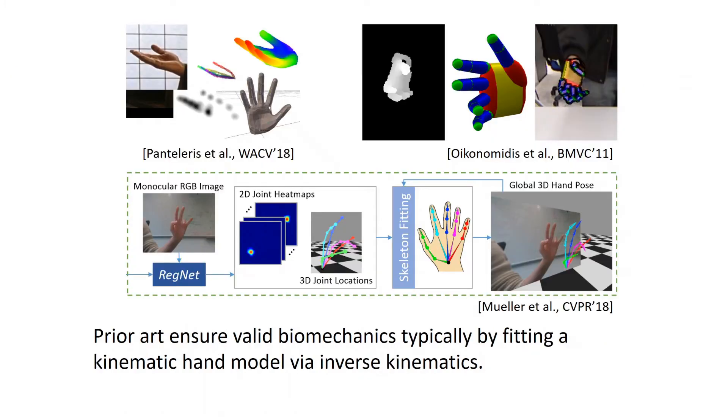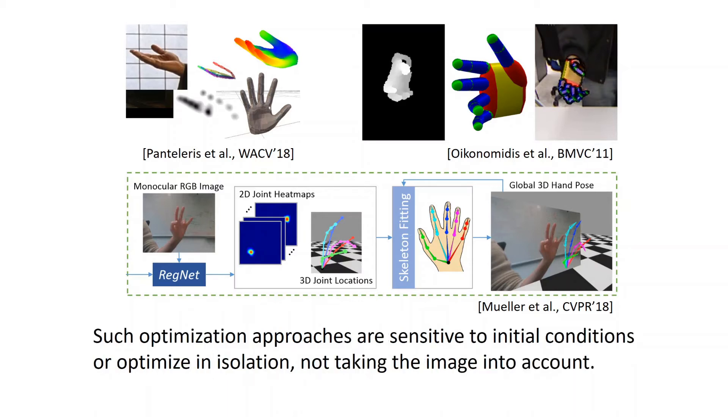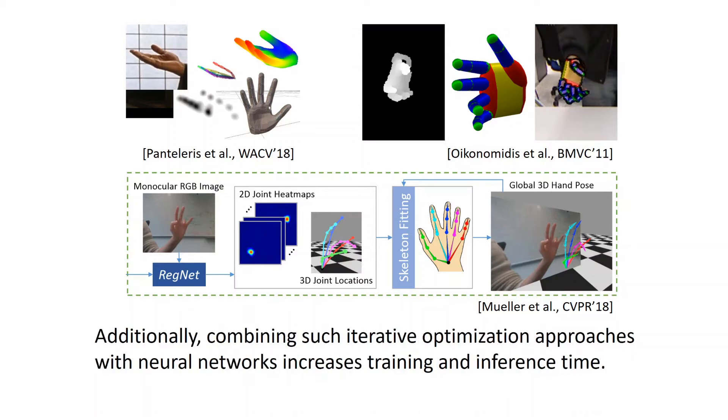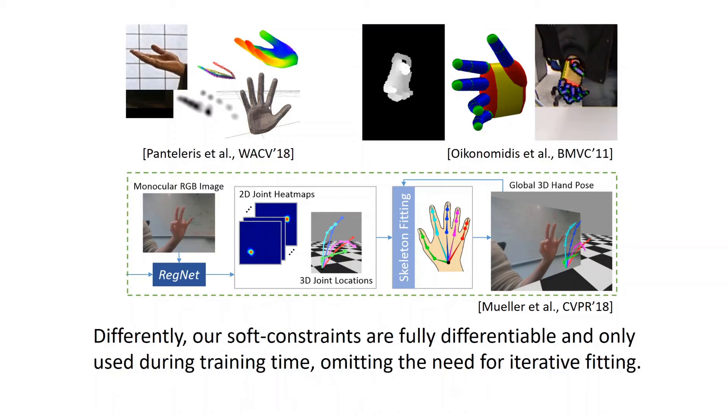Prior art ensures valid biomechanics typically by fitting a kinematic hand model via inverse kinematics. However, such optimization approaches are sensitive to initial conditions or optimized in isolation, not taking the image into account. Additionally, combining such iterative optimization approaches with neural networks increases training and inference time. Differently, our soft constraints are fully differentiable and only used during training time, omitting the need for iterative fitting.